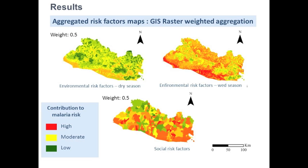This slide shows the final combined risk factor maps. All maps were obtained using GIS software and the raster calculator. In general, all maps present higher risks in the coastal areas, and this is especially evident in the environmental risk factor maps.